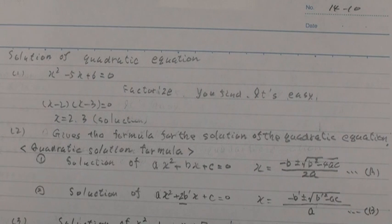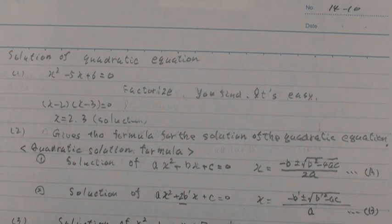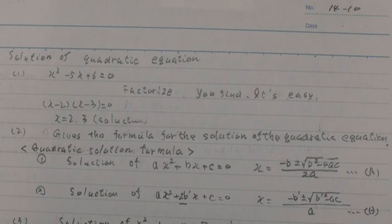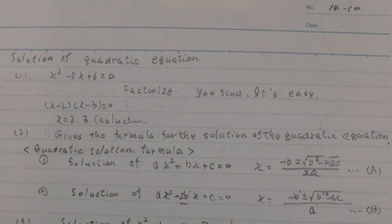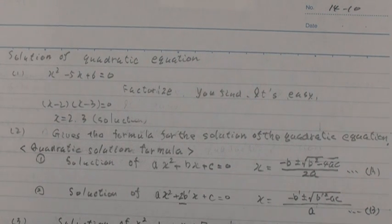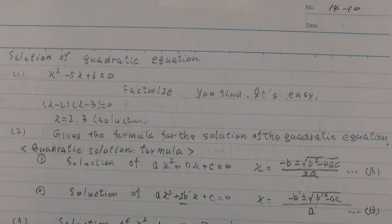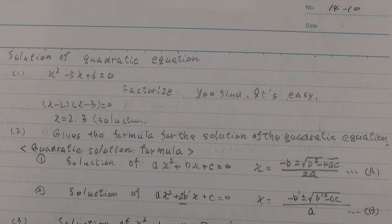This equation by factoring — you find it's easy: x minus 2 times x minus 3 equals 0. This is the solution: x minus 2 equals 0 or x minus 3 equals 0, and then x equals 2 or 3.